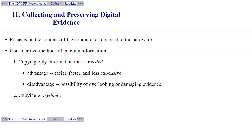We've already discussed forensic copying, but sometimes the scope of your search warrant may limit what is allowed to be collected. You may need to be selective in terms of what you copy and how much information from the original evidence you retain. Copying less information has advantages — it may be easier, faster, and less expensive in terms of time and storage space — but the disadvantage is the possibility of overlooking some evidence.